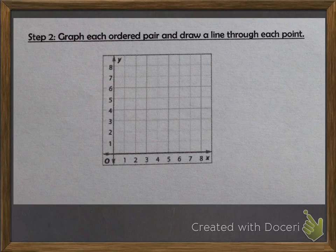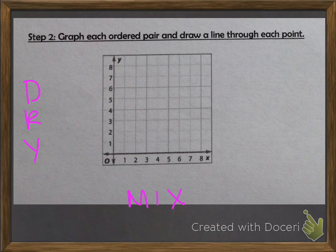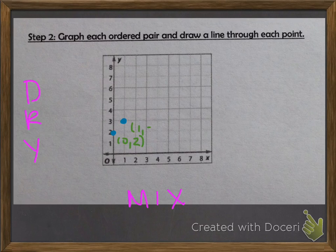Step 2 is when we get to the graph. We will graph each ordered pair and then draw a line through each point. Our first ordered pair was (0, 2). Remember we do the x axis first and then the y axis. Let's write the word 'dry mix' just so we remember which variable goes where. So I have (0, 2) as my first point, then (1, 3), and then our third ordered pair was (2, 4).